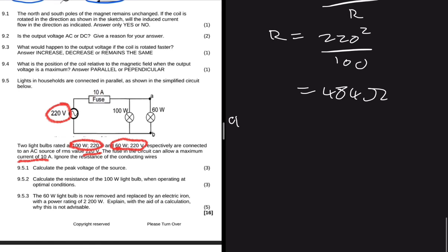And yeah I think that's all. We can move to 9.5.3. So 9.5.3 is saying the 60 watt light bulb is now removed and replaced by an electric iron. Okay, an iron generally consumes more power than a bulb.